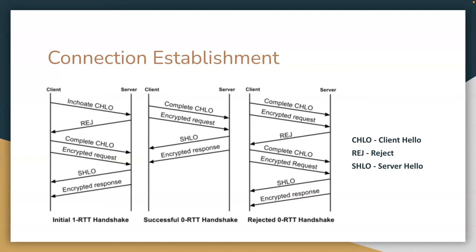Now that both sides have those values, they can calculate the final forward-secure keys for the connection. The initial client data is encrypted using the initial keys — kind of like TLS session-level encryption with session tickets. Once both sides receive the SHLO message, they can start using the forward-secure keys, which are much more secure. The client can then cache the server config and address token so it doesn't have to repeat this process — it can move into using the zero RTT handshake. However, if the source address token or server config expires, or the server changes its certificate, there will be a handshake failure and we have to re-initialize with the one RTT handshake.